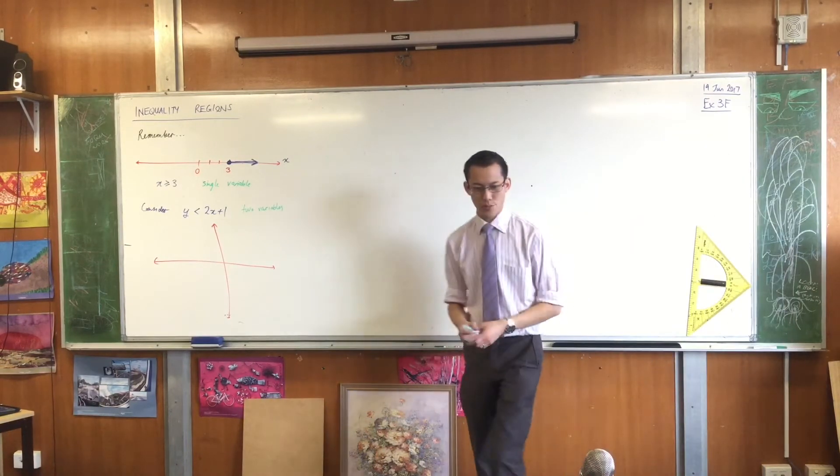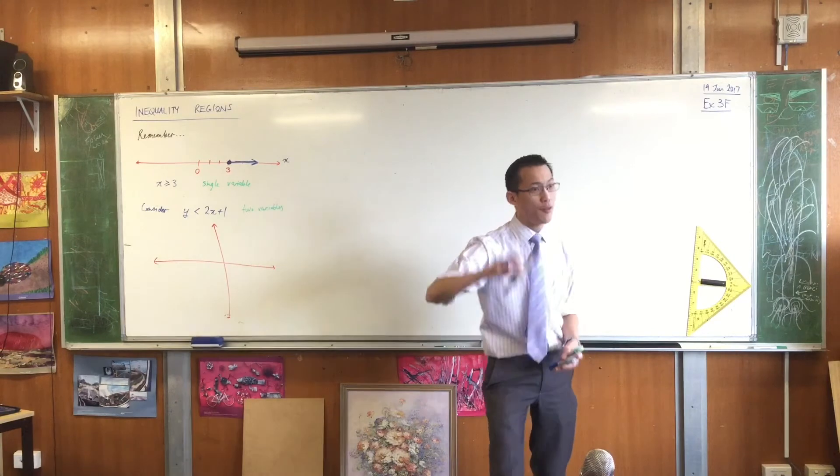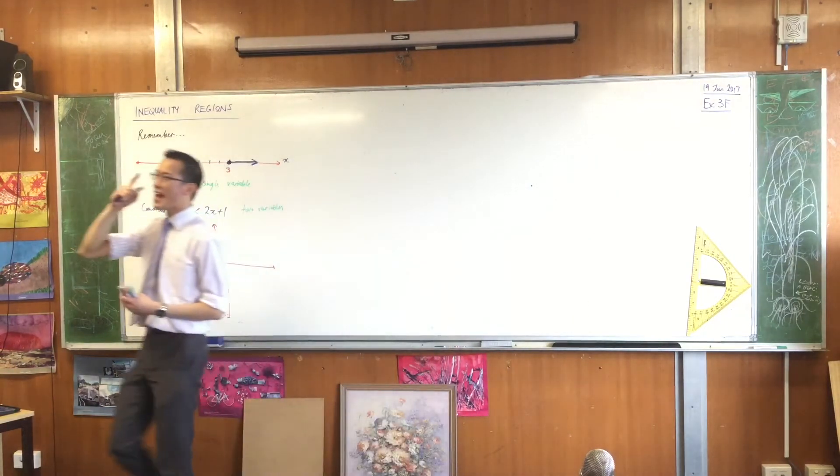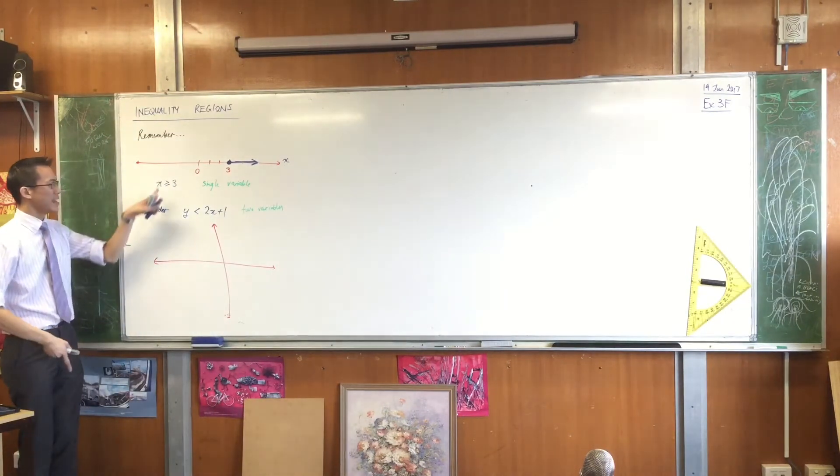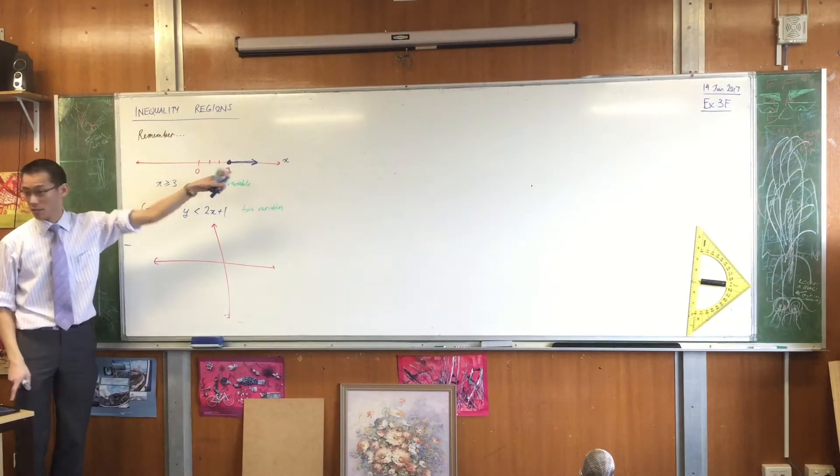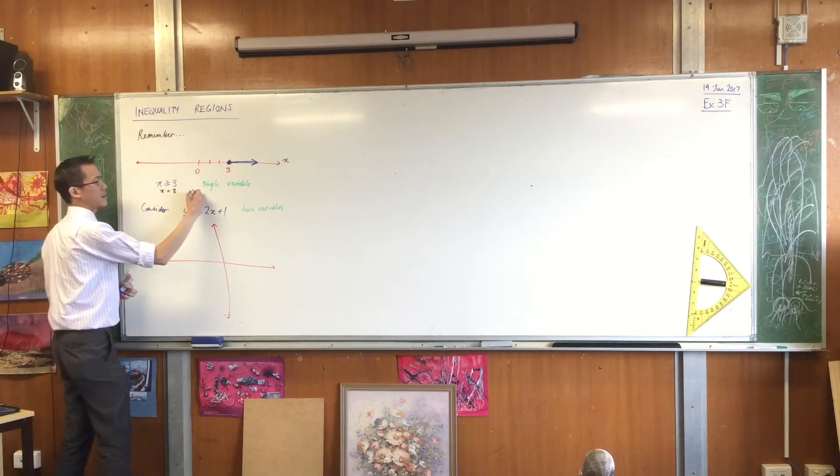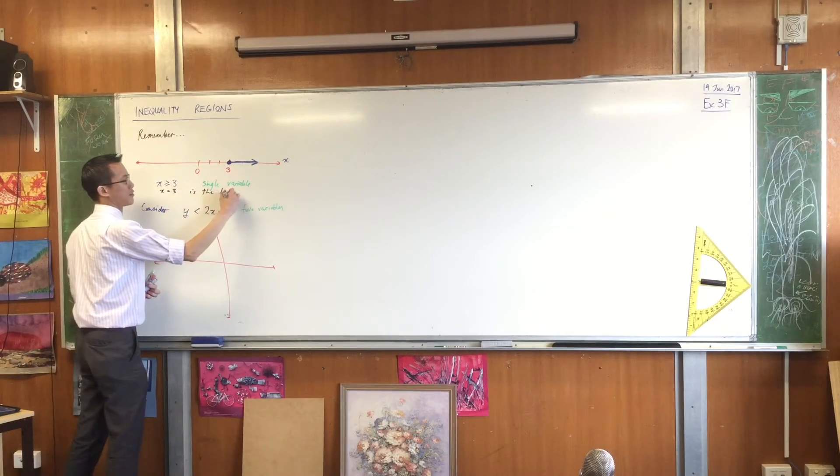Now, what I want you to notice is this. For the inequality x is greater than or equal to 3, x equals 3 is the boundary value for this part that I shaded. Does that make sense? x equals 3 is the boundary.